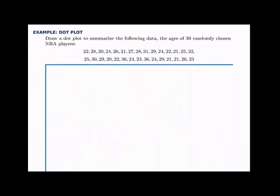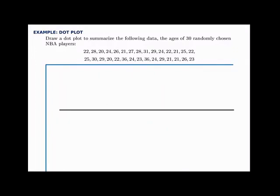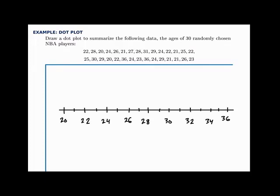In this example, we'll draw a dot plot. We're given data representing the ages of 30 randomly chosen NBA players. The first thing we need to do is draw an axis that covers the full range of the data. Scanning through, the lowest value is around 20 and the highest is about 36, so let's draw an axis with values from 20 up to 36. Now we read through each data point and put a dot for each one. For the first value at 22, we put a dot above the 22. Then 28, we put a dot at 28. It doesn't matter how high we put them as long as we place them at consistent heights so we can visualize the final result.